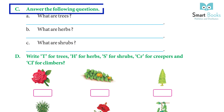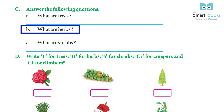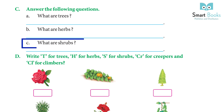Answer the following questions. A: what are trees? Answer: very big plants are called trees. B: what are herbs? Answer: some plants are very small with soft and green stems — they are called herbs.